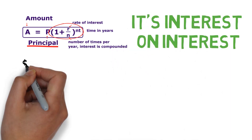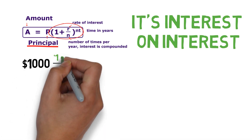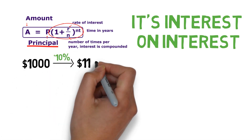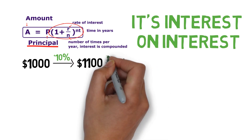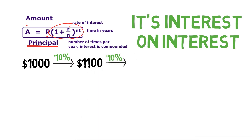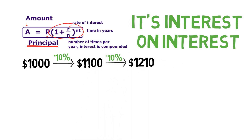In other words, if you have $1,000 and earn 10% in interest, you have $1,100. Then if you earn 10% interest on that, you end up with $1,210 — and so on and so forth until you have a very hefty sum of money.